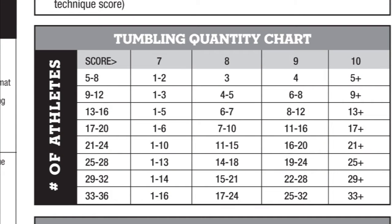The quantity score for tumbling is based on the number of tumbling passes executed within your routine. Quantity for tumbling is cumulative throughout your routine and is based on the number of passes executed, not who executes them. There is a range for how many athletes and how many tumbling passes need to be executed to receive a certain score. For example, if a team of 15 executes six level appropriate tumbling passes and another team of 15 executes seven level appropriate tumbling passes, they will both receive a score of eight for their tumbling quantity.